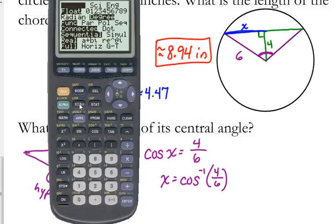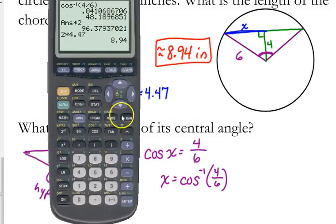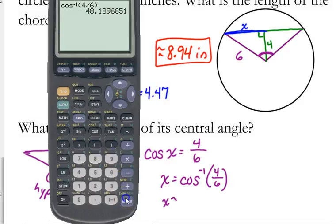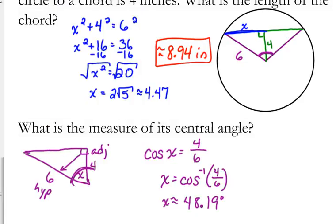And make sure your calculator is in degree mode. When I did this first thing this morning I did not change my mode and my answer looked really weird, but that kind of alerted me this is not the right answer. So the angle that I've labeled as X is approximately 48.19 degrees.